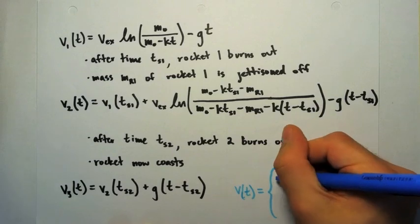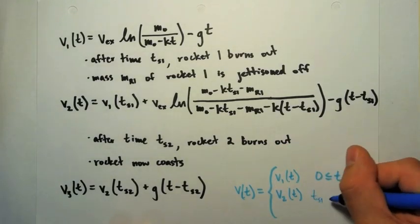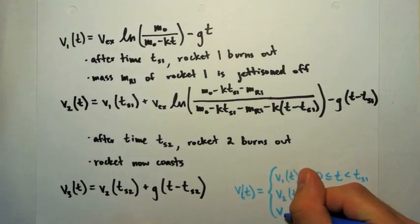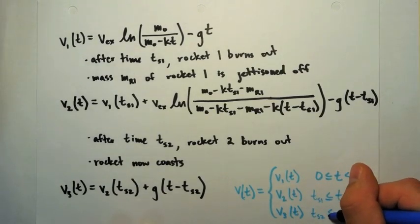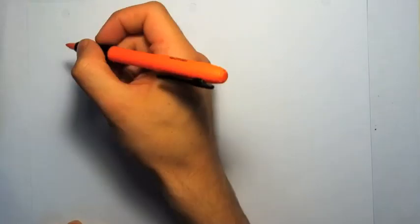Alright, so now just as a summary of what we're going to plot, we have v1 on the interval from 0 to Ts1, and then v2 is on the interval Ts1 to Ts2, and then v3 is just Ts2 to infinity.